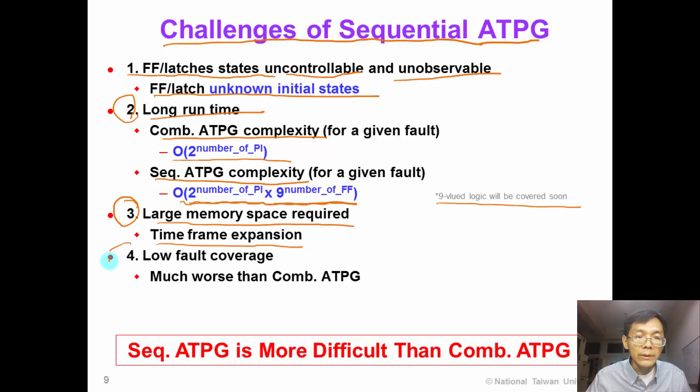And eventually even if we can generate sequential ATPG patterns, the fault coverage is typically very low. The fault coverage of sequential ATPG is typically much worse than combinational ATPG. In summary, sequential ATPG is a much more difficult problem than combinational ATPG.